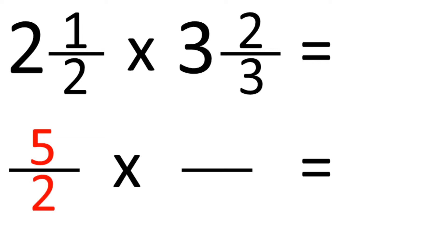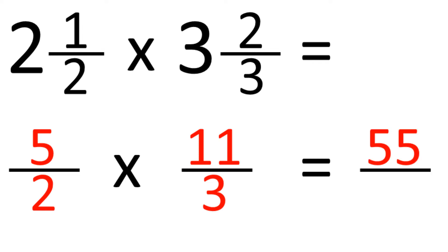Now 3 and 2 thirds: 3 times 3 is 9, plus 2 is 11, so this becomes 11 over 3. And so now we just proceed as in the first example. 5 times 11 is 55, and 2 times 3 is 6. So the answer is 55 over 6.